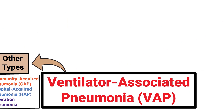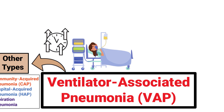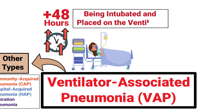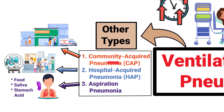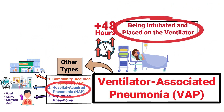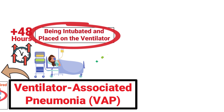For it to classify as ventilator-associated pneumonia, the patient must acquire the infection more than 48 hours after being intubated and placed on the ventilator. This is how we can differentiate it from hospital-acquired pneumonia, because intubation and mechanical ventilation are involved.